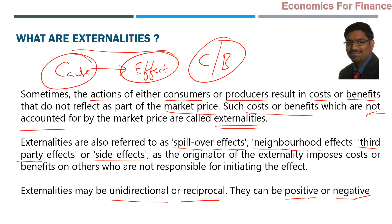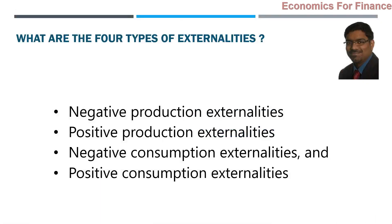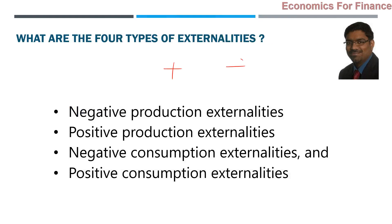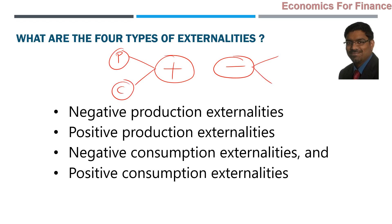We should understand the concept of externalities in multiple aspects, including their types. There are four types of externalities. Broadly, there are positive and negative externalities; each can happen from the production side or consumption side. So: negative production externalities, positive production externalities, negative consumption externalities, and positive consumption externalities. When we say production or consumption, we are talking about the originator — who is causing it. If it is a production externality, it is caused in the process of production.